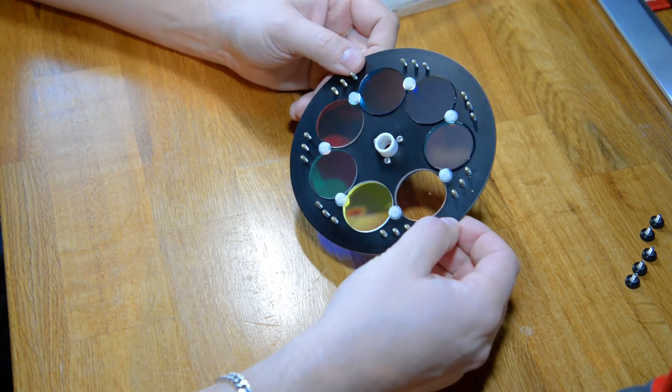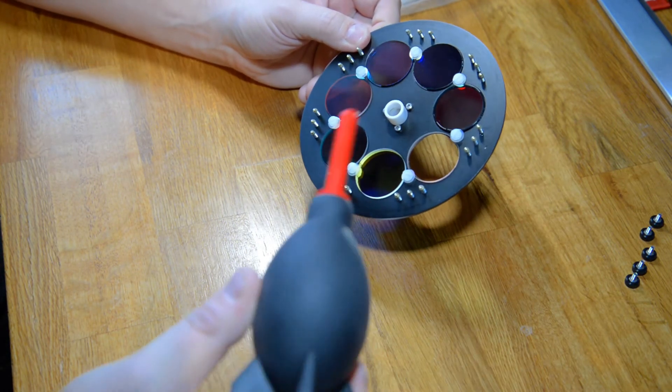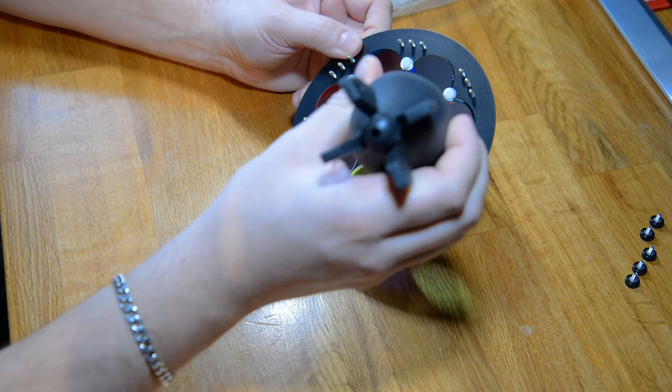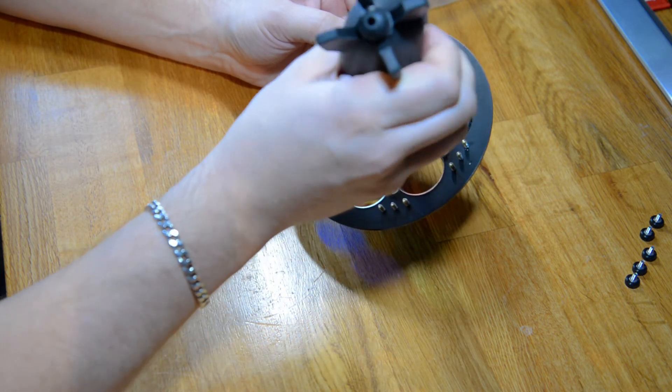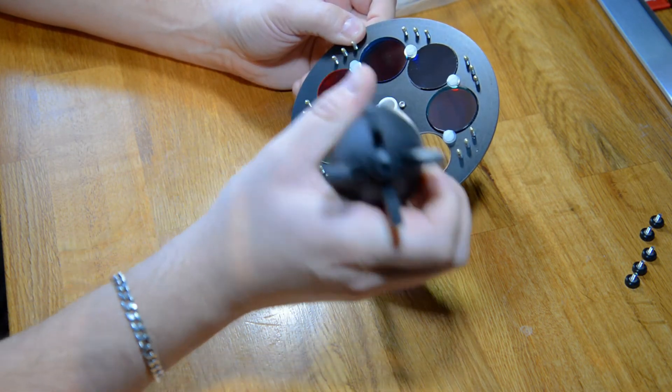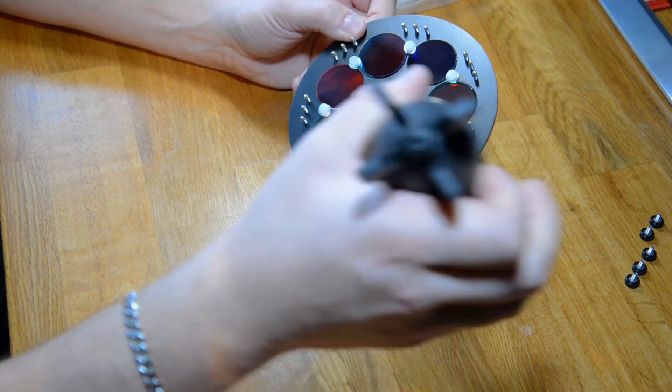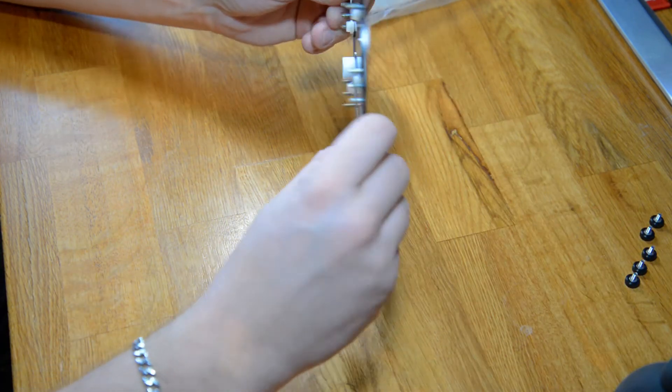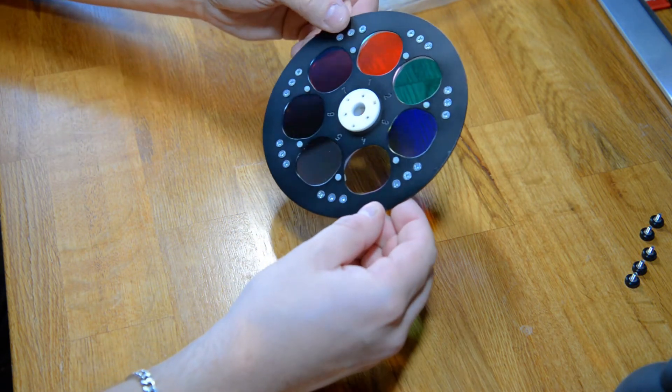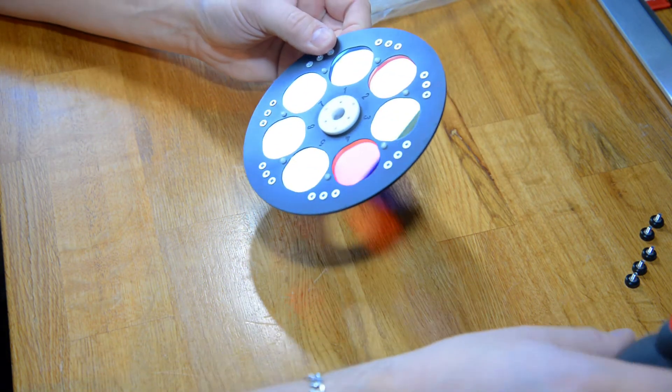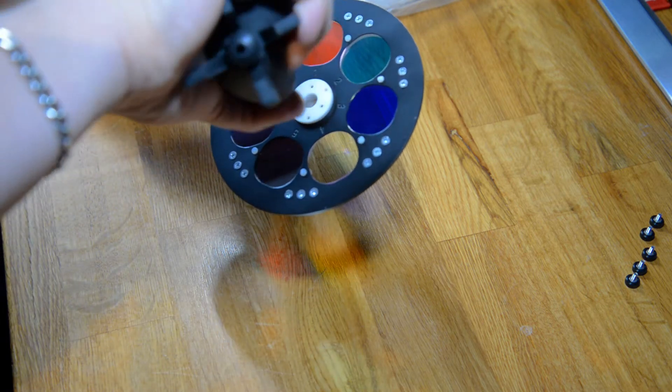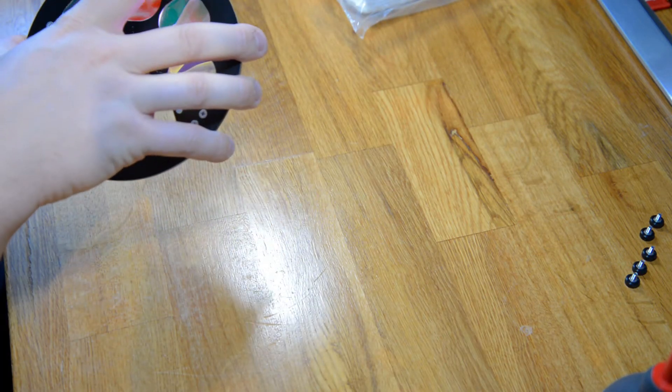So I have now cleaned all the filters. And it is just a bit of dust in this room. So I constantly see that some dust particles are landing on the filters. But they are clean. As clean as I can get them.